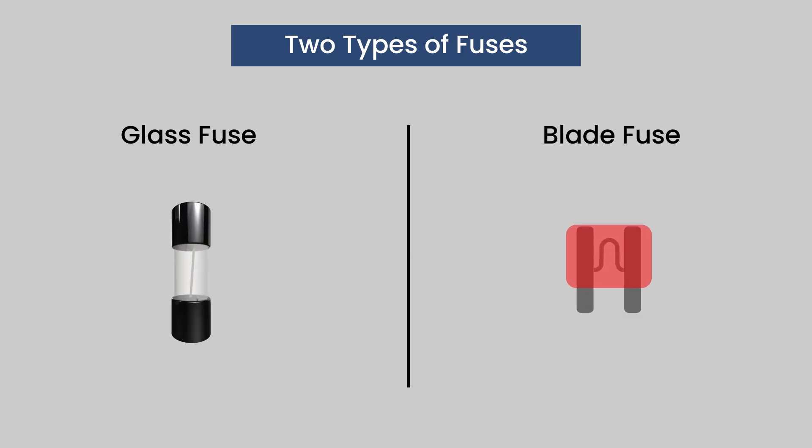There are generally two types of fuses. Older cars have glass cylinder shaped fuses with steel in the ends. Newer cars have a plastic housing with a fusible link in the middle between two metal prongs.